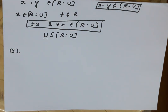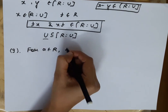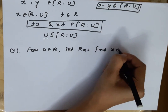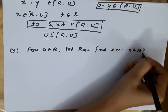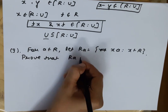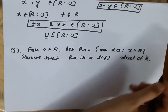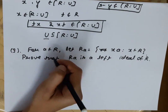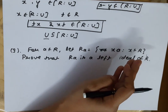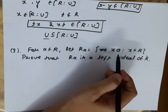Let's start with Question Number 9. For a fixed element a belonging to R, let R·a = {x·a : x ∈ R}. Prove that R·a is a left ideal of R.